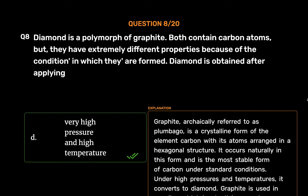Graphite, archaically referred to as plumbago, is a crystalline form of the element carbon with its atoms arranged in a hexagonal structure. It occurs naturally and is the most stable form of carbon under standard conditions. Under high pressures and temperatures, it converts to diamond. Graphite is used in pencils and lubricants, and is a good conductor of heat and electricity.